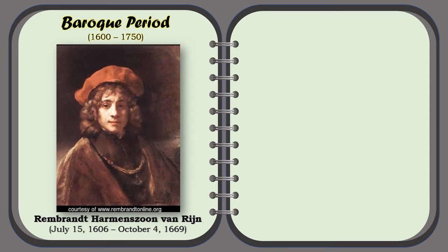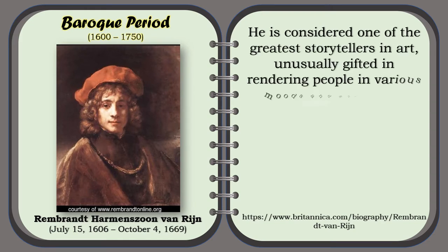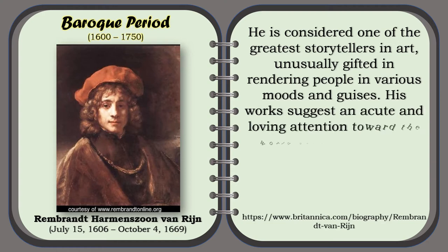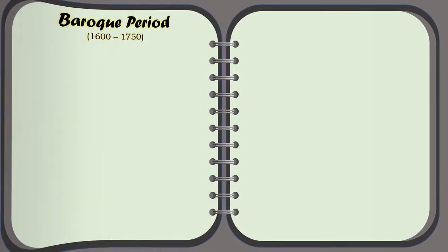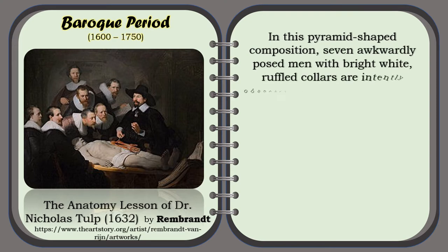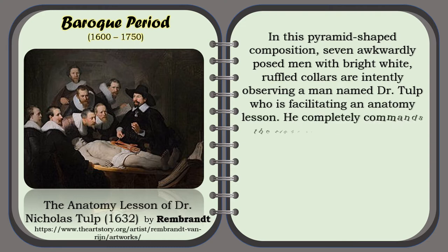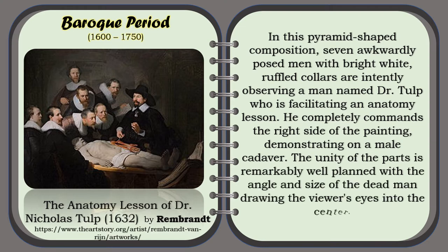Another prominent artist of the Baroque period was Rembrandt Harmensz van Rijn. He is considered one of the greatest storytellers in art, unusually gifted in rendering people in various moods and guises. His works suggest an acute and loving attention toward the world around him, and a strong understanding of the significant detail — a dual quality that inspired later artists. Rembrandt's famous work was the Anatomy Lesson of Dr. Nicolaes Tulp in 1632. In this pyramid-shaped composition, seven awkwardly posed men with bright white ruffled collars are intently observing Dr. Tulp, who was facilitating an anatomy lesson. He completely commands the right side of the painting, demonstrating on a male cadaver. The unity of the parts is remarkably well planned, with the angle and size of the dead man drawing the viewer's eyes into the center.